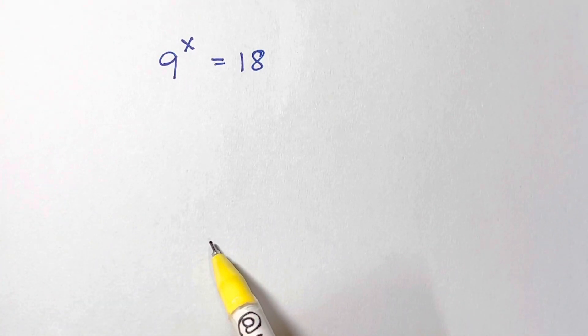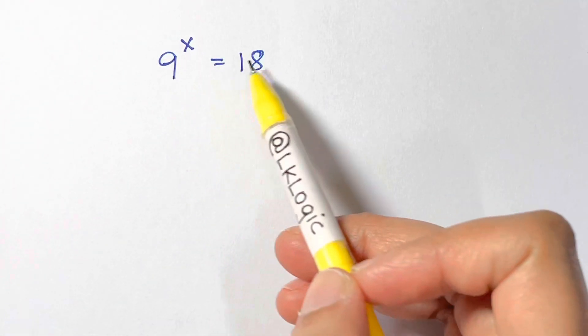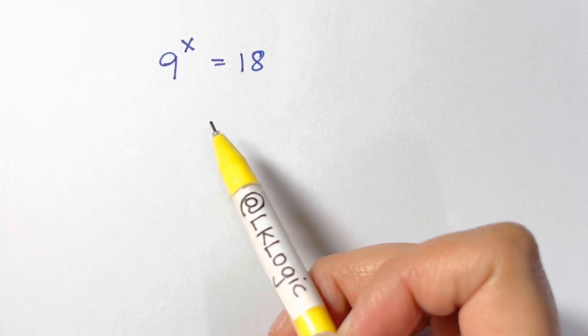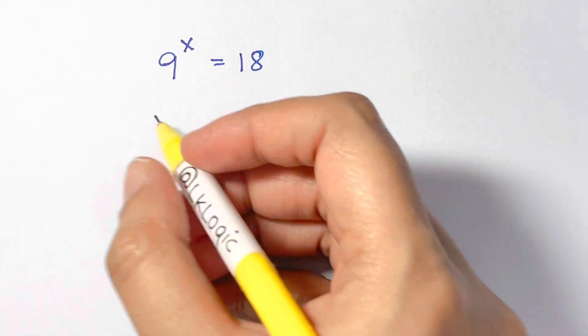Hi everyone, let's solve an easiest question ever. 9 to the power of x equals 18. So what do you think the answer is? Let's check it out.